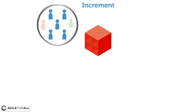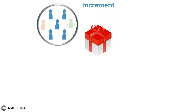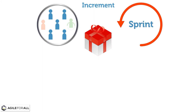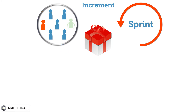In Scrum, the development team works to deliver a new increment of the product every sprint. Each increment is a new, updated, usable version of the product, so the product owner may choose to immediately release it. A product increment is a tangible output of each and every sprint.